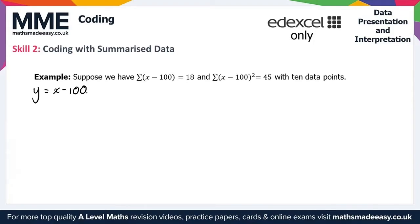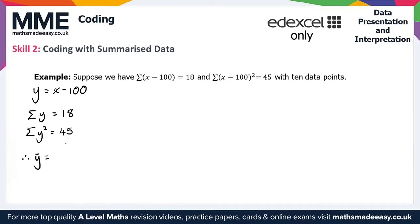With y = x − 100, replacing x − 100 with y gives us Σy = 18. And since Σ(x − 100)² is Σy², we get Σy² = 45. With 10 data points, y-bar equals Σy over n, which is 18 over 10, giving y-bar equals 1.8.